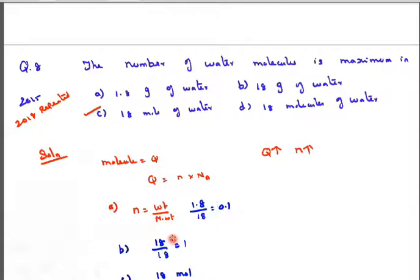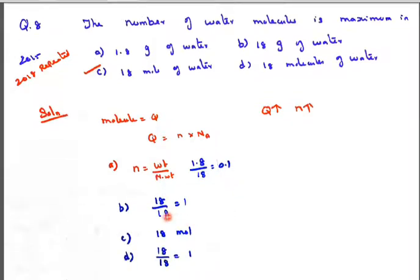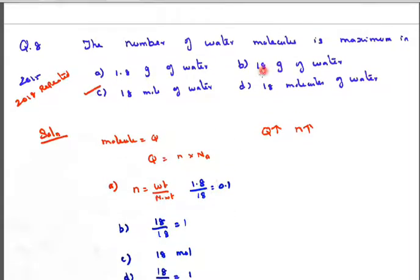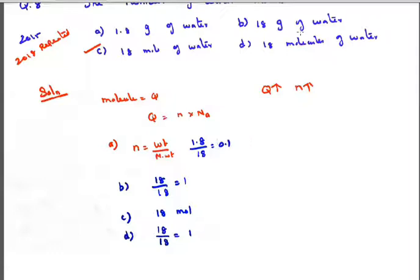Using n = weight / molecular weight, with molecular weight of water = 18: for 1.8 g, n = 1.8/18 = 0.1 mol. For 18 g, n = 18/18 = 1 mol. The third option already states 18 moles — no calculation needed. For 18 molecules, that is 18/Nₐ, which is negligibly small. The maximum number of moles is in the third option: 18 moles. That is the correct answer.